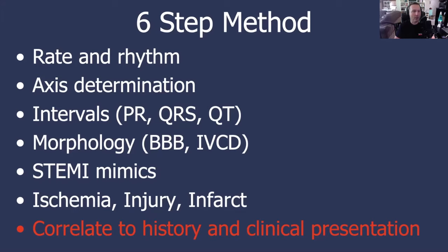Step three is our designated time to specifically look at the PR interval, the QRS duration, and the QT interval. In step four, we're going to look at morphology. In particular, when supraventricular rhythms are wide, we're going to try and differentiate them into right or left bundle branch block or an interventricular conduction defect.